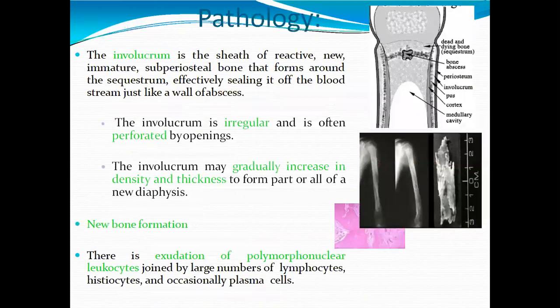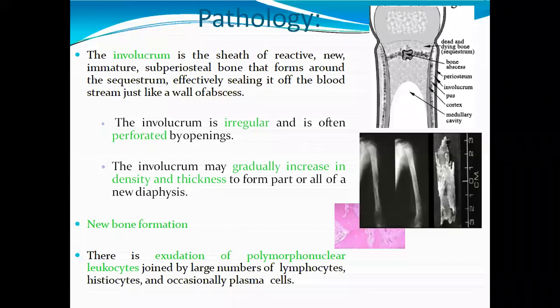The pathological forms include dead and drying bone, periosteal abscesses, and involucrum formation in the medullary cavity. The involucrum is a sheet of reactive new immature subperiosteal bone that forms around the sequestrum, effectively sealing it off — acting like a wall of an abscess.